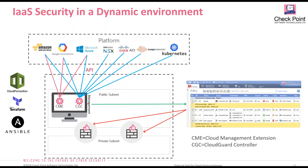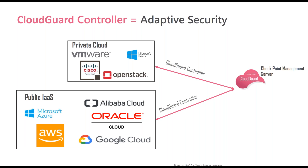Tenemos dos componentes básicos en la comunicación de nuestra consola contra las diferentes nubes: el Cloud Management Extension, que se ocupa para las nubes públicas, y el CloudGuard Controller, que se utiliza para las nubes privadas. Con estos dos elementos nos comunicamos mediante API del Management hacia cada una de las nubes para poder ver los objetos que necesitamos definir en las políticas.